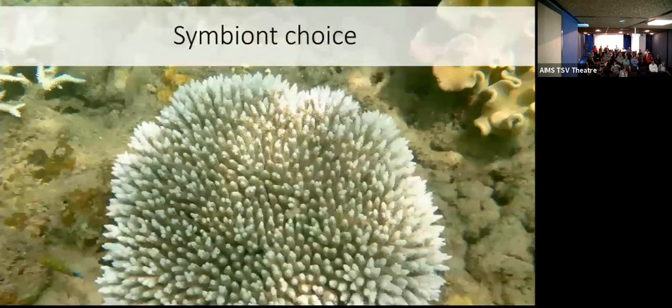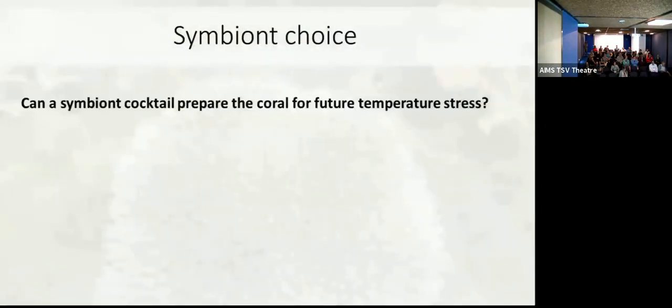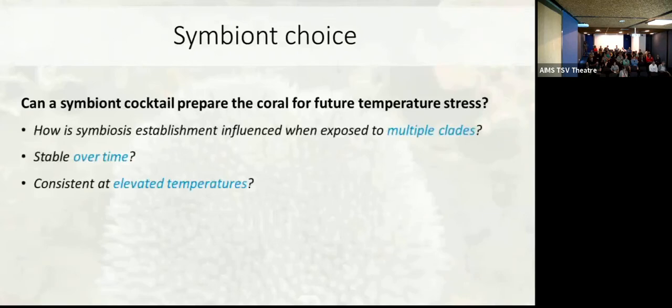So the first project we're looking at is a symbiotic choice project. And what we were interested in is, basically, if we concoct a symbiotic cocktail that we offer these larval corals, could they take up more thermally tolerant strains? Could this be a way that we help scale up how to make corals more thermally tolerant? And with these questions, the first things that we were trying to address is if we offer them multiple clades, what happens?